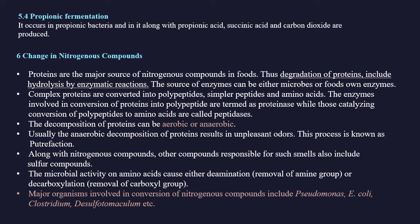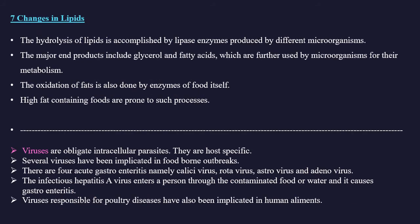Sulfur compounds also contribute to putrefactive smell. Microbial activity on amino acids causes either deamination (removal of amine group) or decarboxylation (removal of carboxyl group). Major organisms involved in conversion of nitrogenous compounds are Pseudomonas, E. coli, Clostridium, and Desulfotomaculum. For changes in lipids, hydrolysis is accomplished by lipase enzymes produced by different microorganisms, yielding glycerol and fatty acids used further by microbes. Oxidation of fats is also done by food's own enzymes; high-fat foods are prone to such processes.